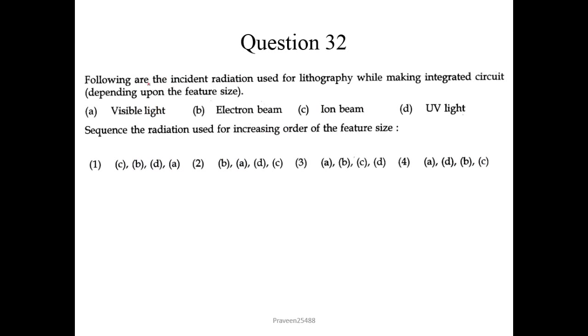Now question number 32. Following are the incident radiation used for lithography while making integrated circuit. Depending upon the feature size. So we know that the smaller the feature means more devices can be packed on a chip, which allows faster and more robust processor and RAM. So currently we know ultraviolet is worldwide used for lithography and gives feature size up to 0.2 micrometer. Currently I don't know the feature size of different radiations given here. And so we will discuss it later.